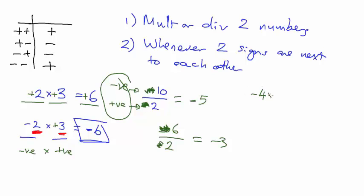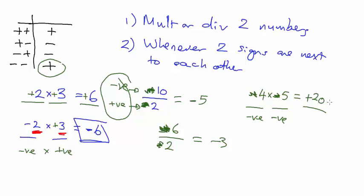Let's do minus four times minus five. Two numbers multiplying - you've got negative times negative. Negative times negative gives you a positive, so your answer is going to be positive. Ignore the signs: four times five is twenty. So the answer is plus twenty - or just twenty.